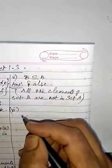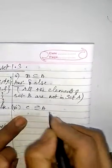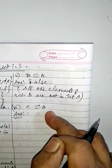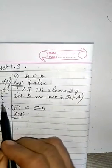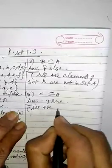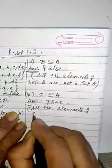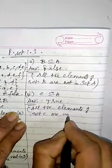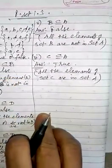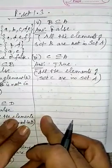Practice it either way, children. Now the sixth question — C is a subset of A. Which is the smaller set? C. Which is the bigger set? A. C elements: B — is B in A? Yes. D — is D in A? Yes. So all the elements are there. So is it a subset? Yes, it is a subset. True. For the reason, write: all the elements of set C are in set A. Is it clear, children? Understood?